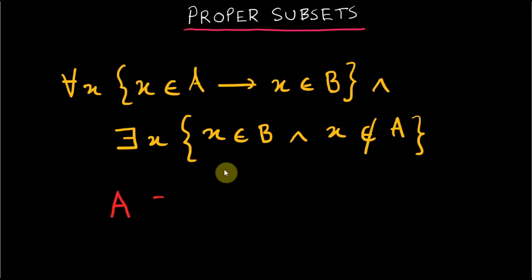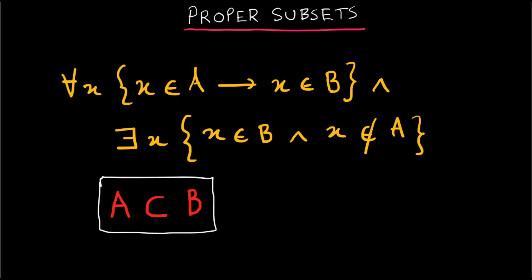The proper subset is denoted as A proper subset of B. The Venn diagram of proper subset will look like this for some set A and B.